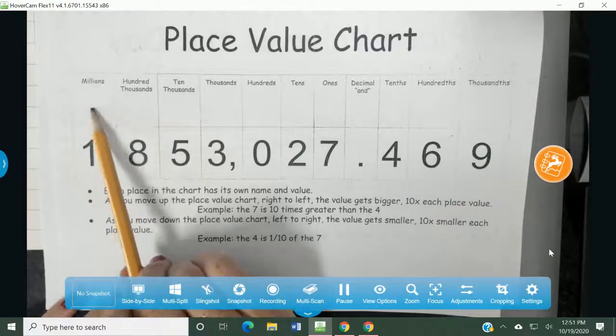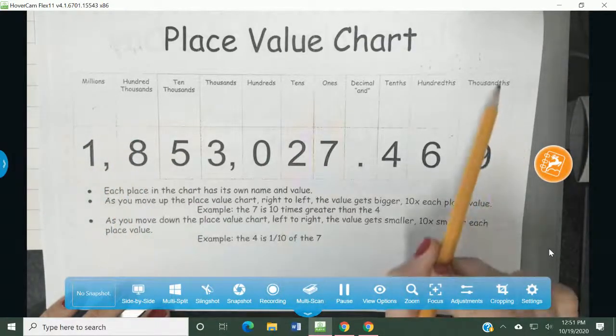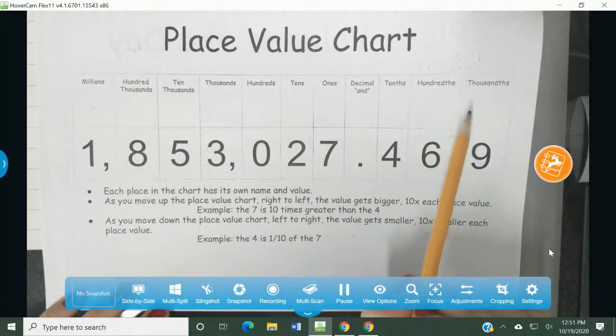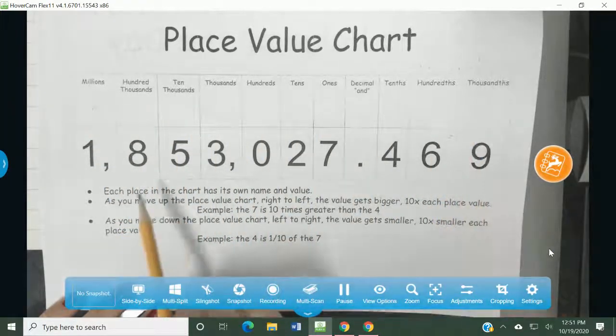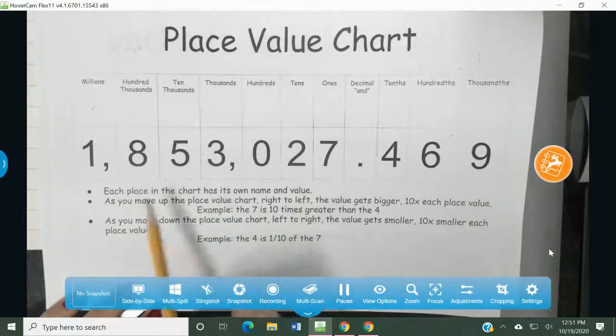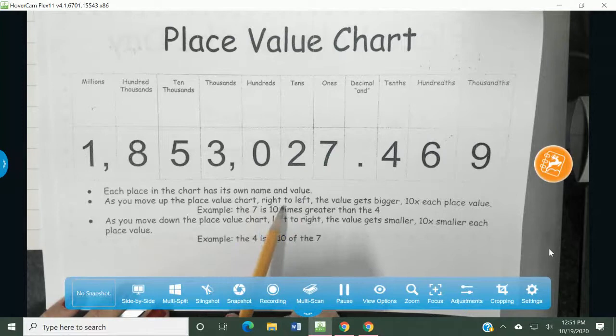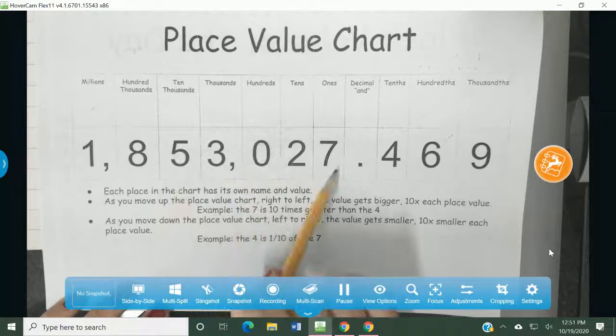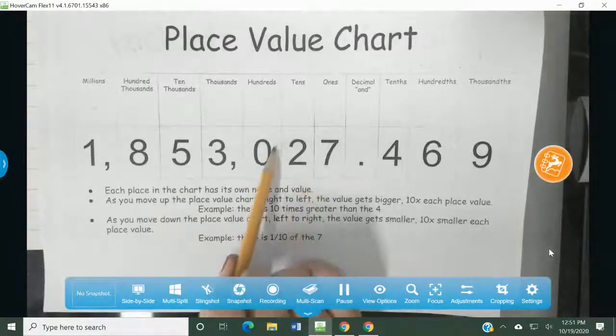It goes all the way from up in the millions all the way to the thousandths. So we have an example of all of the places and where they belong, what they're called. And then we talk about how each place in the chart has its own name and value. As you move up the place value chart from right to left, the value gets bigger. It is ten times bigger each place value.